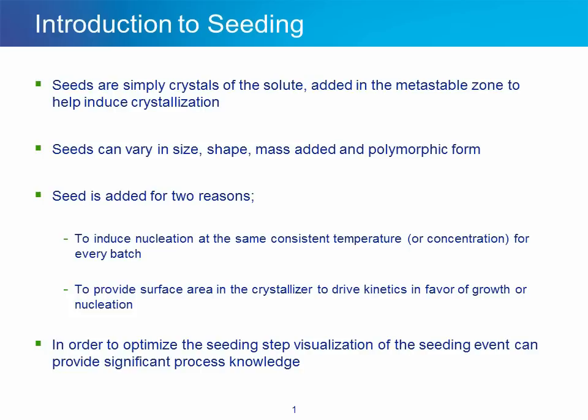The seeding step during crystallization is an important one. Seed crystals are added to the crystallization process in the metastable zone width in order to help induce nucleation. There are a number of variables that can be adjusted during seeding in order to produce different results. These can include the size of the seeds used, the shape of the seeds, and the mass of seed added — the seed loading.